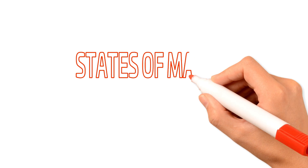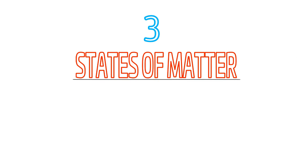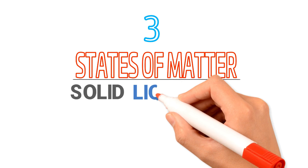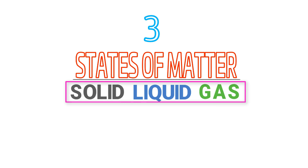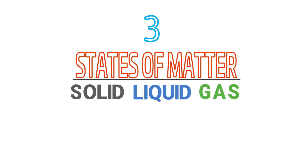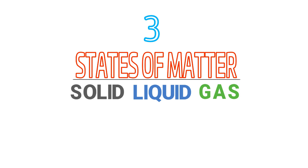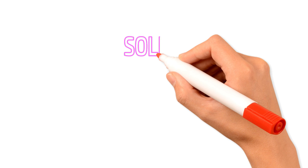Now, what about states of matter? Well, there are three states of matter: solid, liquid, and gas. I will discuss all these three states of matter — solid, liquid, and gas. Firstly, let me teach you about solid.